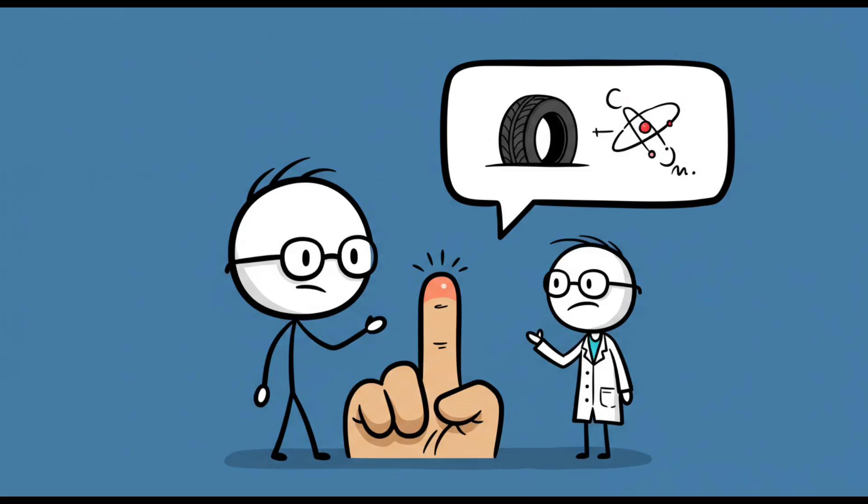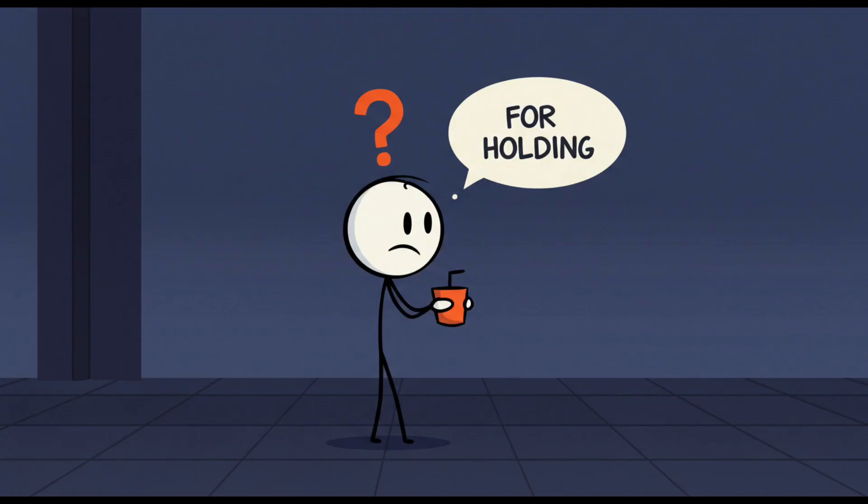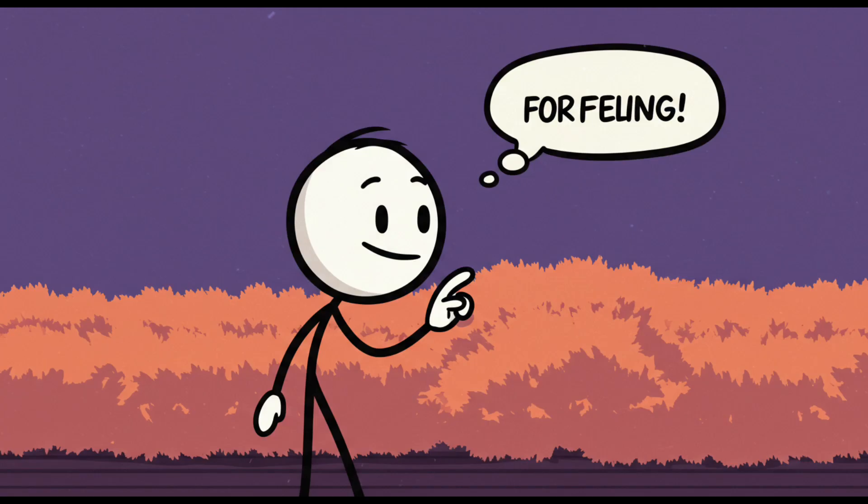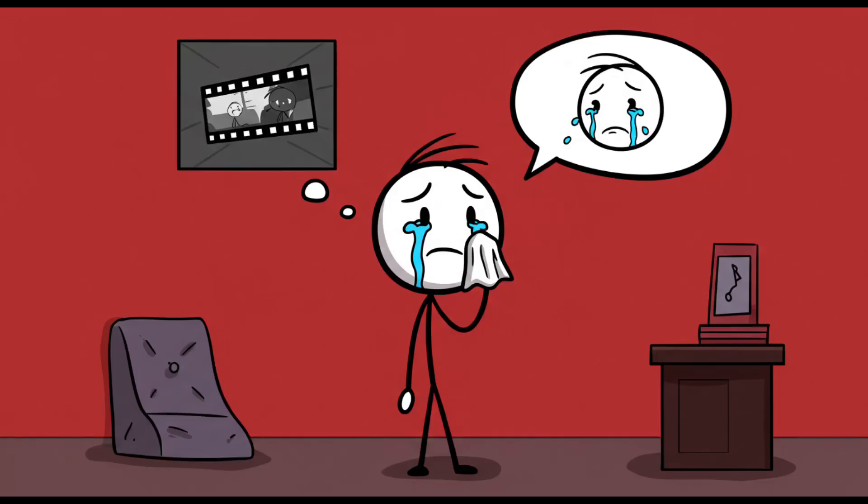So when a kid asks, 'Why do we have fingerprints?' you can go with the science-y grip explanation, or you can be brutally honest. 'We don't know. Maybe it's for holding stuff. Maybe it's for feeling stuff. Or maybe evolution was just bored and wanted everyone to have swirly finger tattoos.' Number 3: Why do onions make us cry?